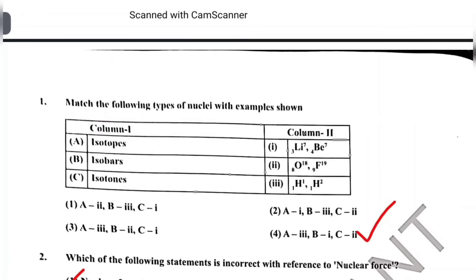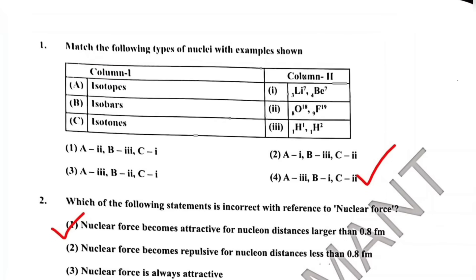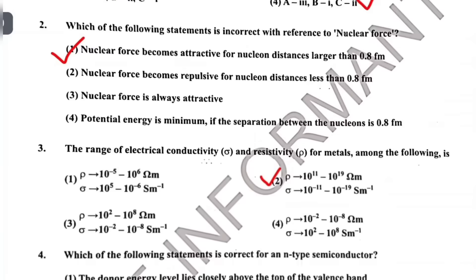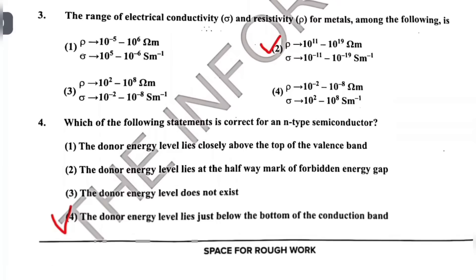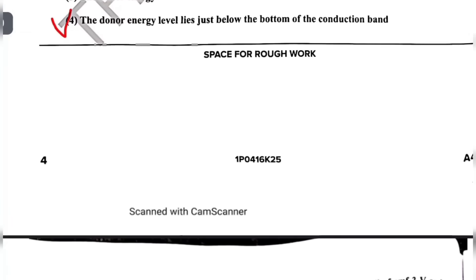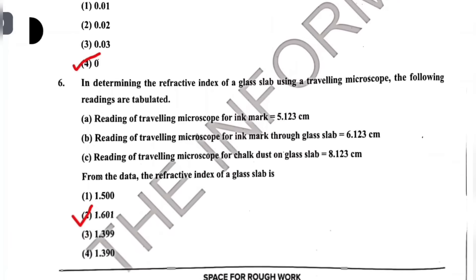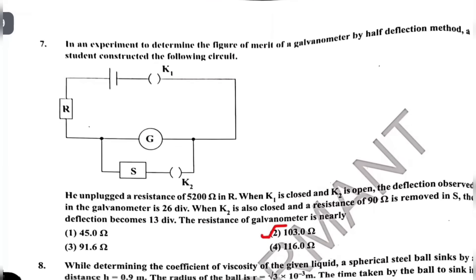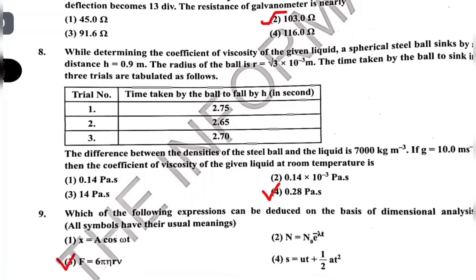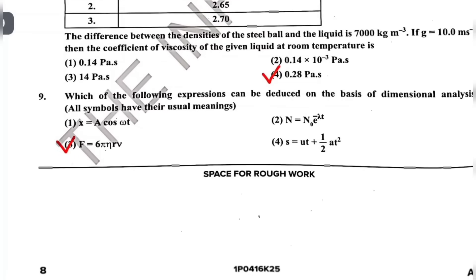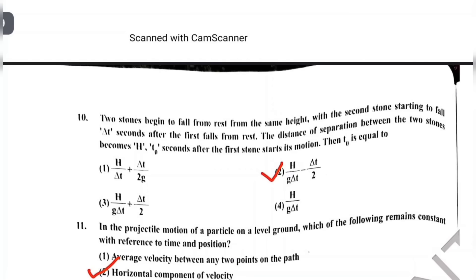Question 1: Match the following types of nuclei — correct answer is option 4. As I mentioned, this same question could be your 31st, 45th, or 20th question in a different set. Question 2: correct answer is option 1. Question 3: option 2. Question 4: option 4. Question 5: option 4. Question 6: option 2. Question 7: option 2. Question 8: option 4.